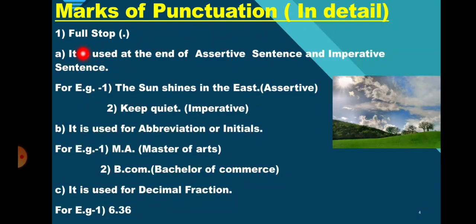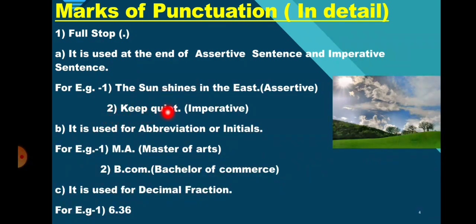First: the full stop. It is used at the end of an assertive sentence and an imperative sentence. For example, 'The sun shines in the east.' — it is an assertive sentence, so at the end we will put a full stop. 'Keep quiet.' — it is an imperative sentence, so at the end of an imperative sentence also, we will put a full stop.